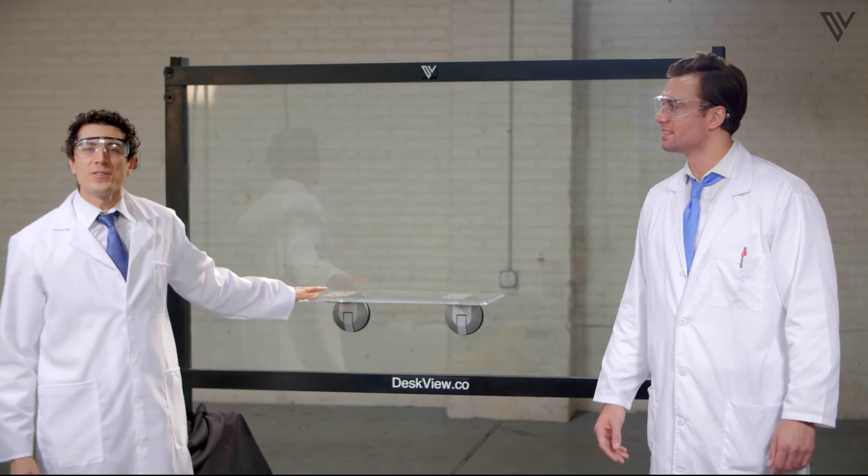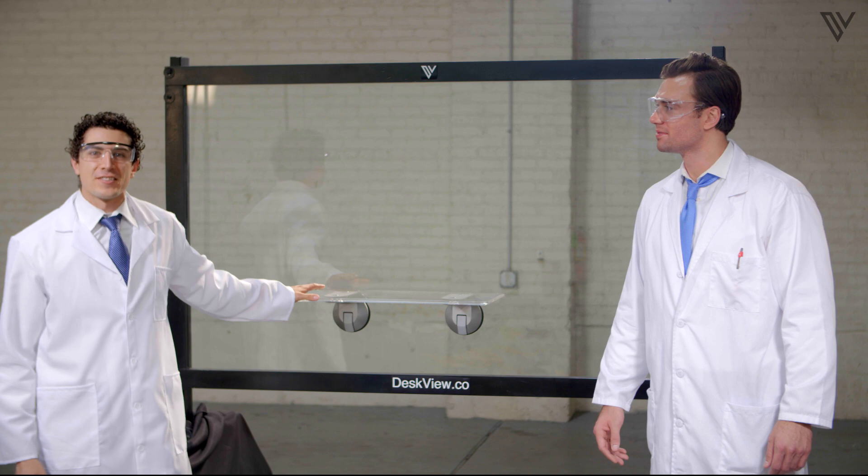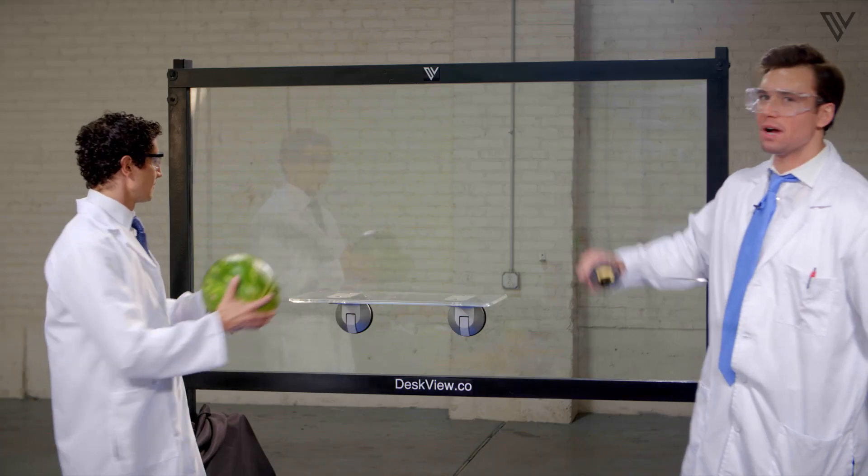But don't take our word for it. Let's put this to the test. Have a watermelon you need to cut with a samurai sword but don't have a platform high enough to come down with the proper strike force? DeskView has you covered.